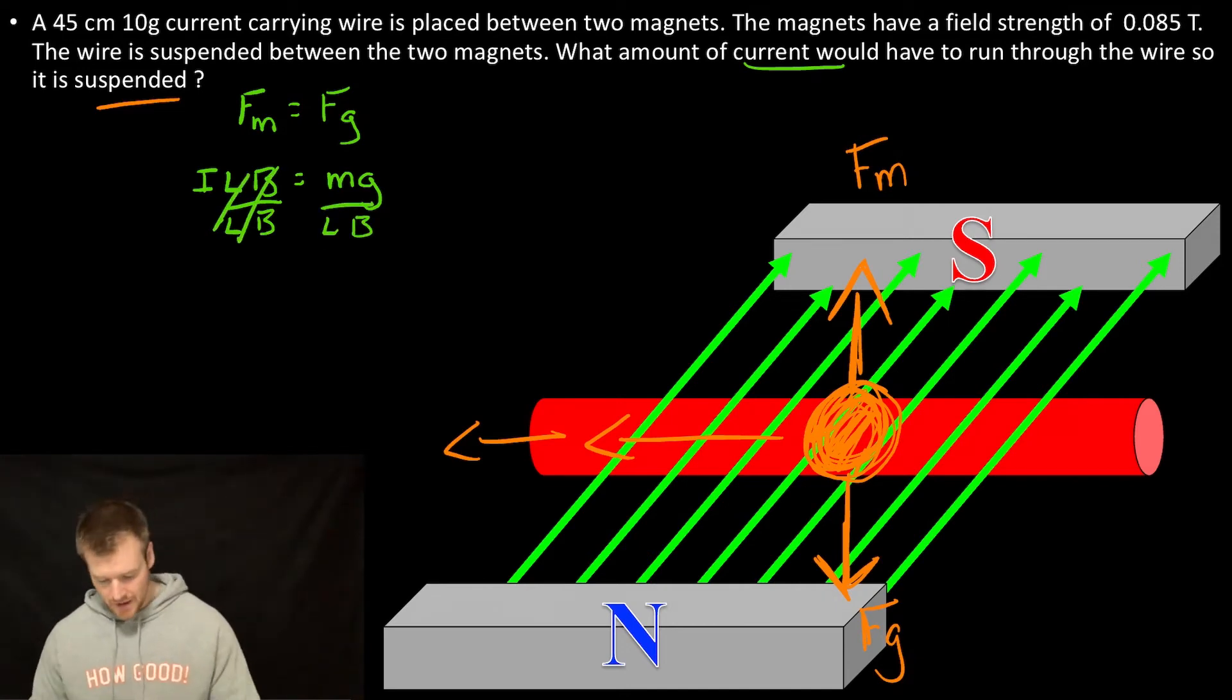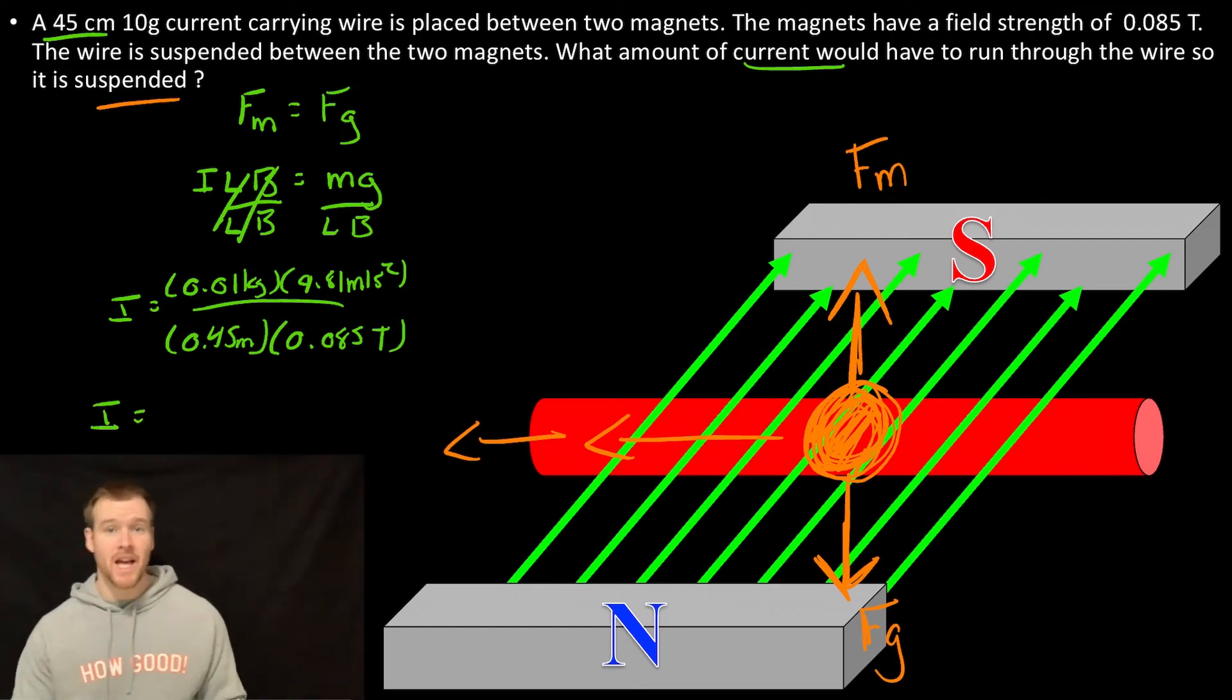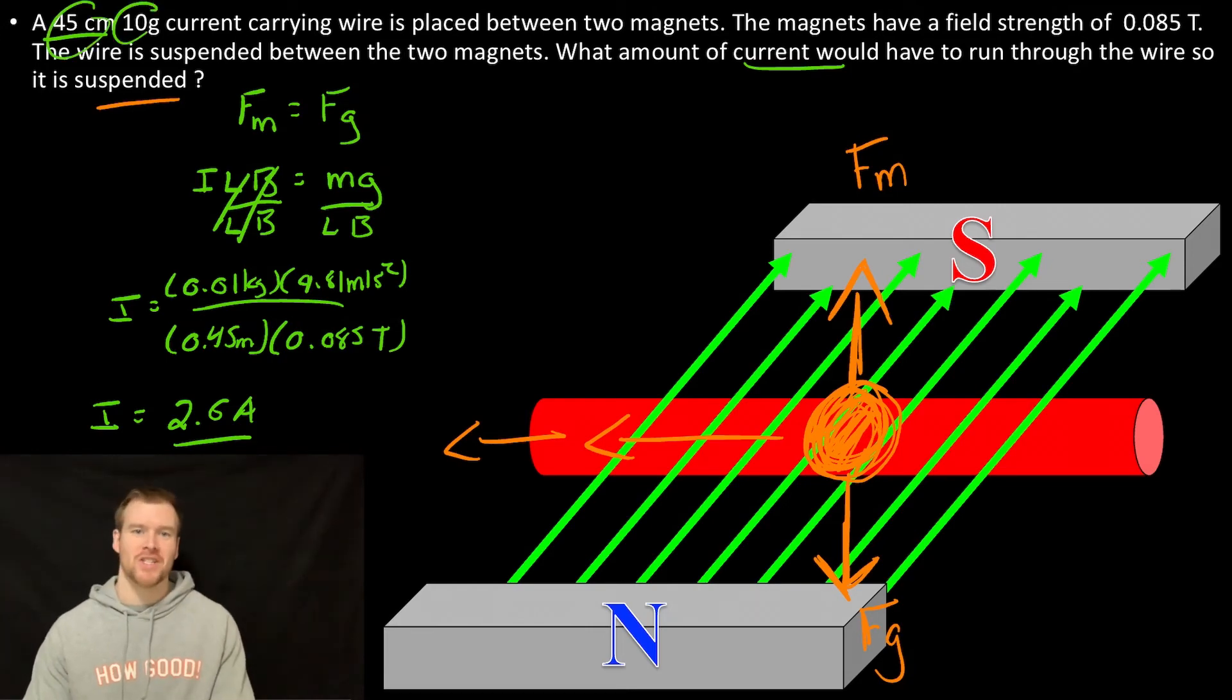I should be able to just plug in here. So I is equal to our mass of 0.01 kilograms. Don't forget to convert that times by the gravity 9.81 meters per second squared, then divide by the length. It said it was 45 centimeters. Make sure you put that in meters. So 0.45. And then the field strength of 0.085 Tesla, which we saw was newtons per meter. And when I plug all that in, I'm getting 2.56, which would round to 2.6 amps of current flowing through this wire, rounded to two significant digits as we had that in the question.